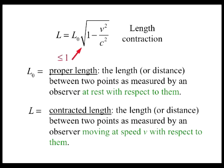Since the term 1 divided by the square root of 1 minus v squared divided by c squared is always less than or equal to 1, L is always less than or equal to L0.